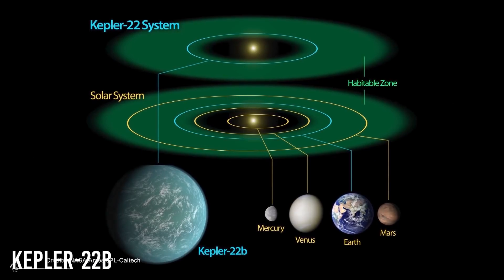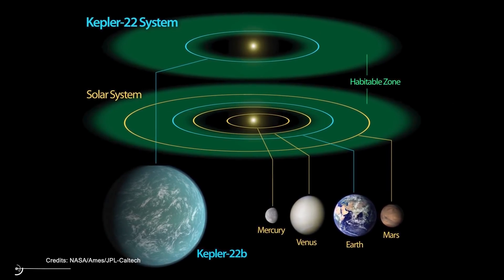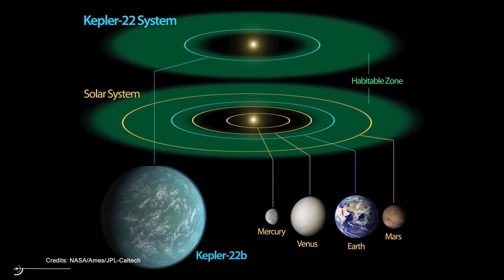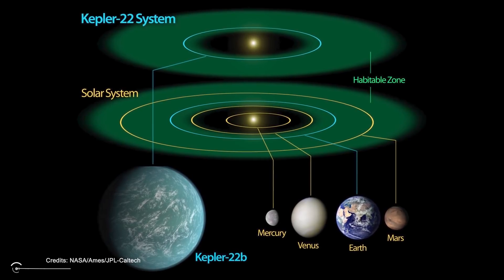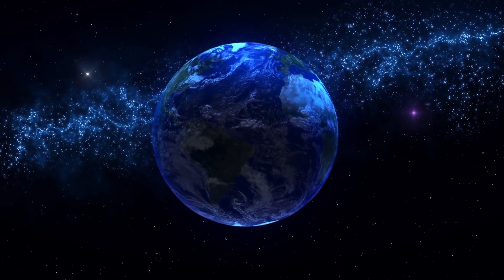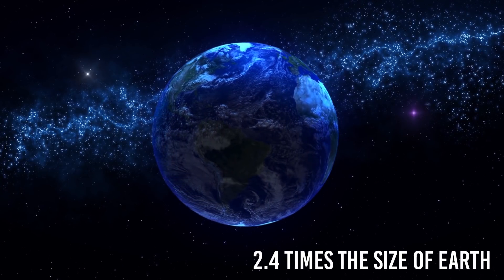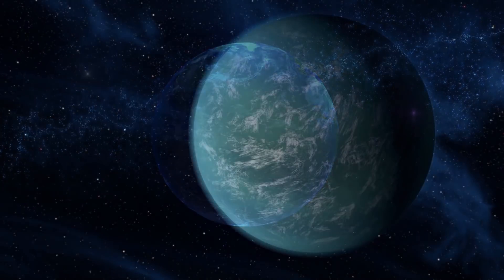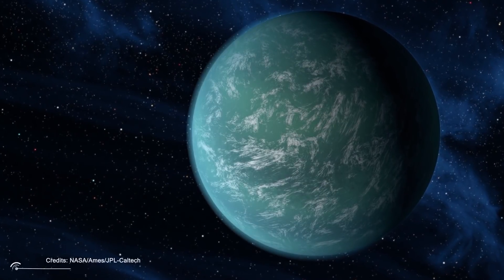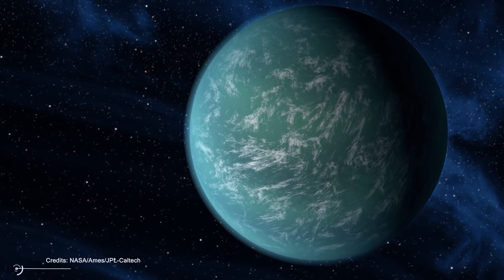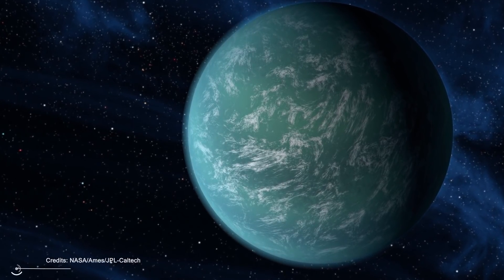Kepler-22b. This is the first planet in a confirmed orbit in a star's habitable zone, the region around a star where liquid water can remain on its surface. Kepler-22b is a super-Earth, about 2.4 times the size of Earth. Scientists don't yet know if the planet has a rocky, gaseous, or liquid composition. The world may have clouds in its atmosphere.